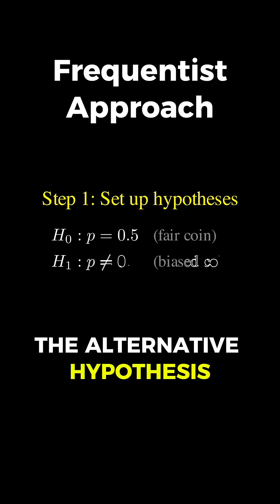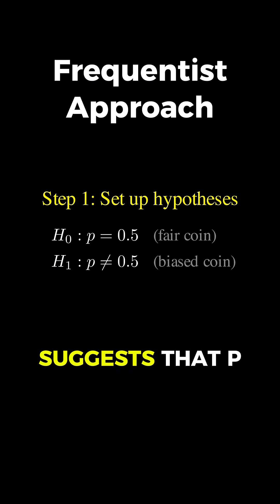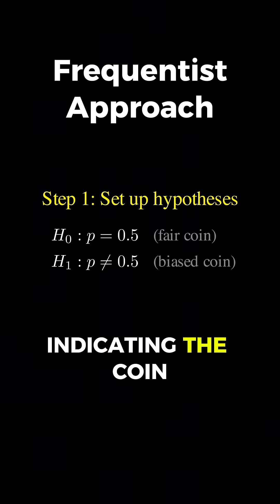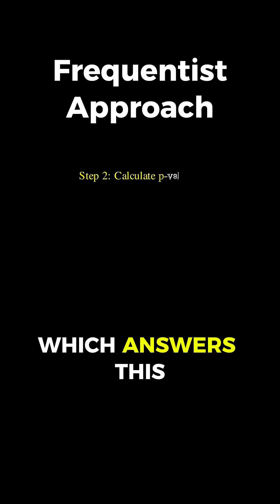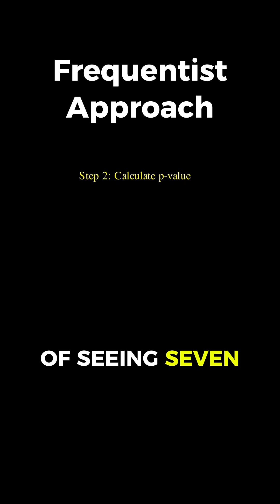The alternative hypothesis, H1, suggests that p does not equal 0.5, indicating the coin is biased in some direction. His next step is to calculate the p-value, which answers this crucial question: What's the probability of seeing 7 or more heads if the coin really is fair?